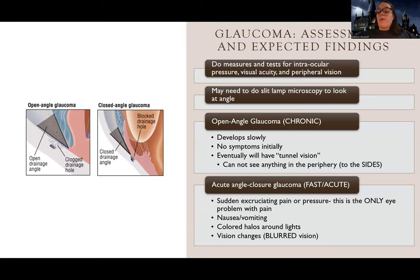Practice question: A nurse is caring for a client who has a history of hyperopia and cataracts. The client calls the nurse to the room complaining of sudden severe eye pain and vomiting. Sudden severe eye pain is acute glaucoma. What is the nurse's priority action?